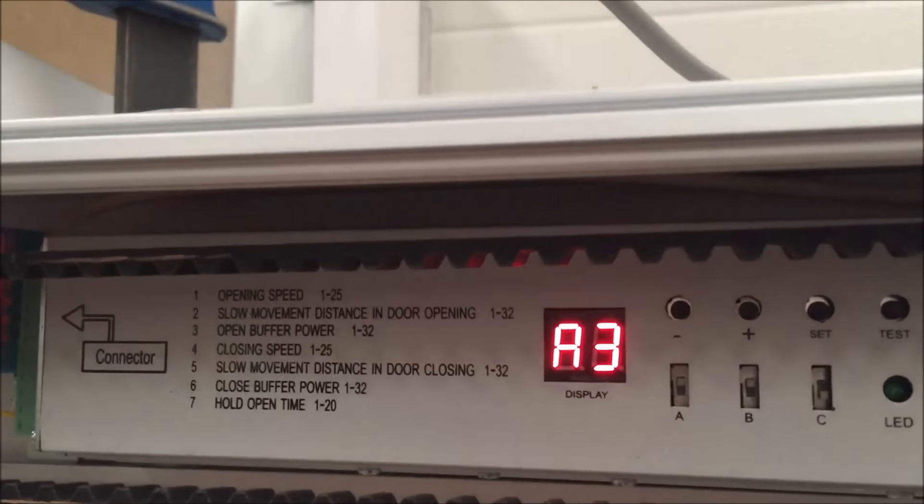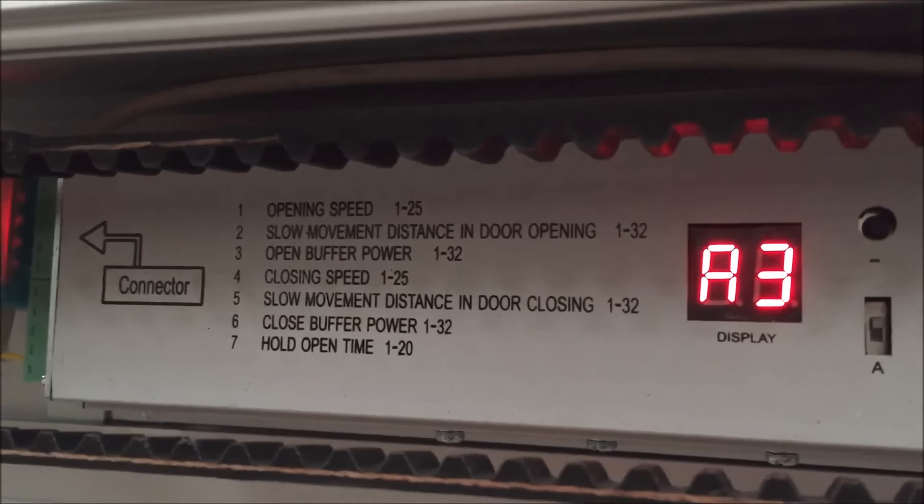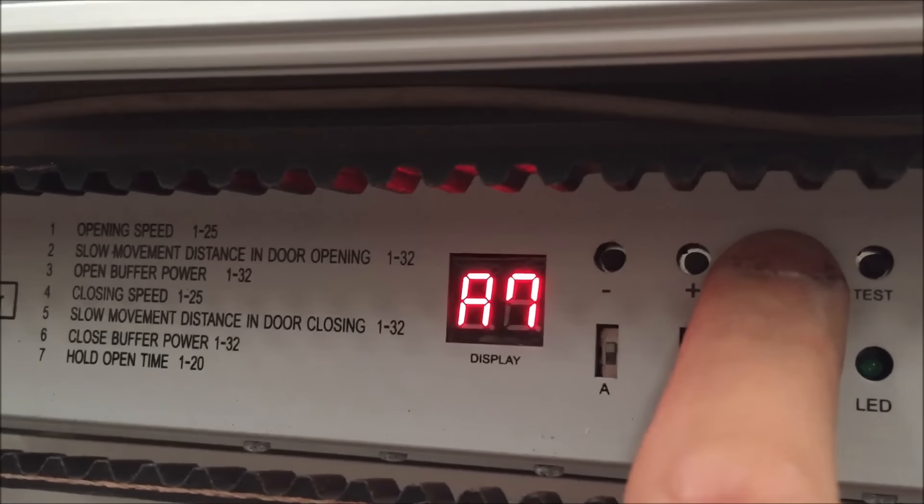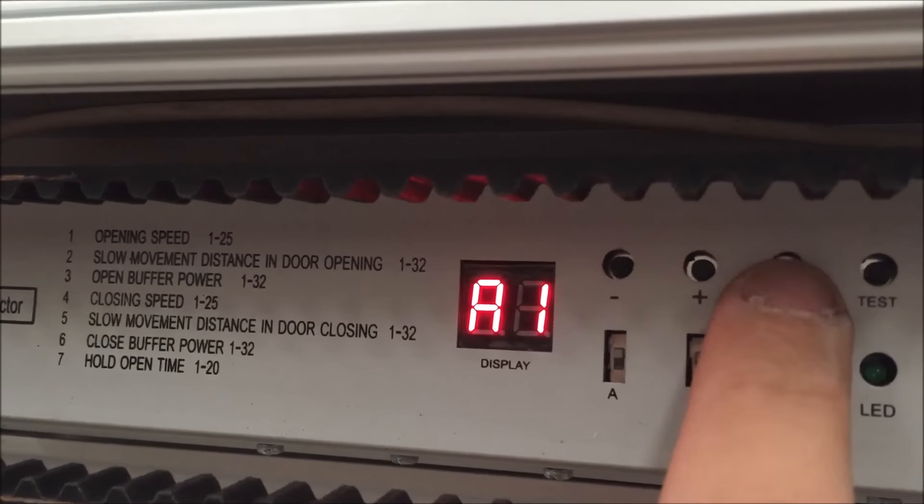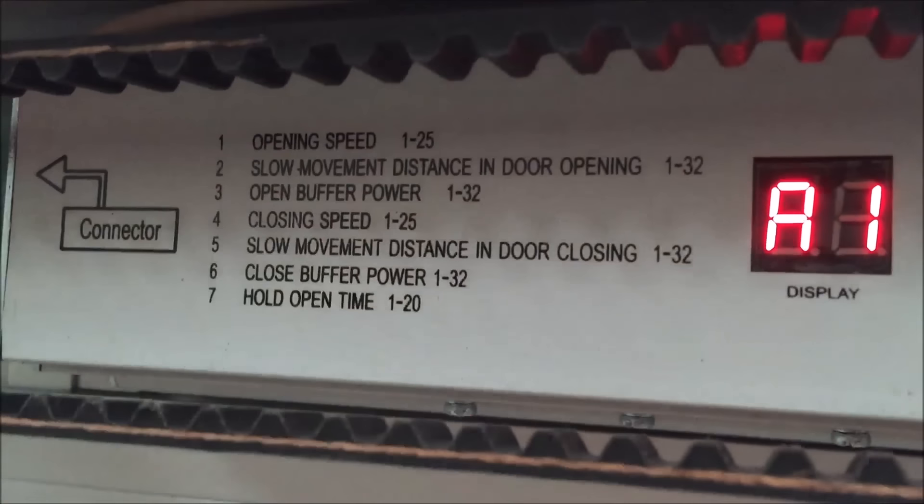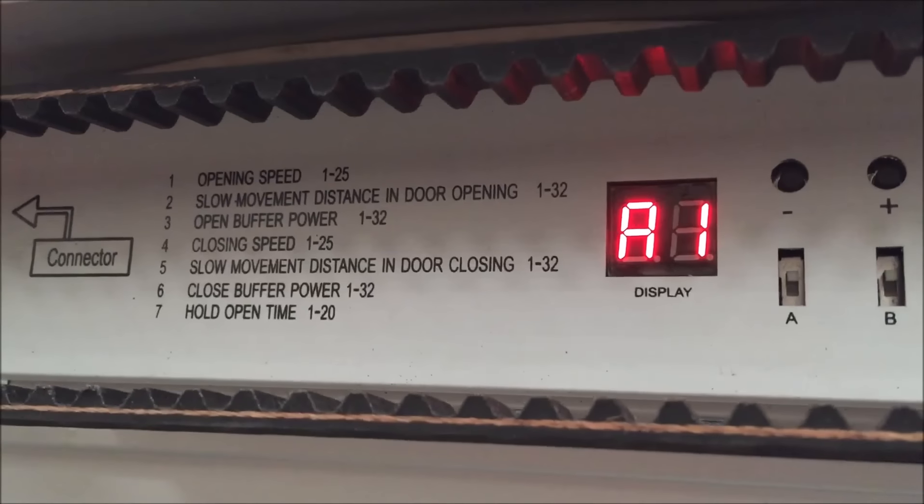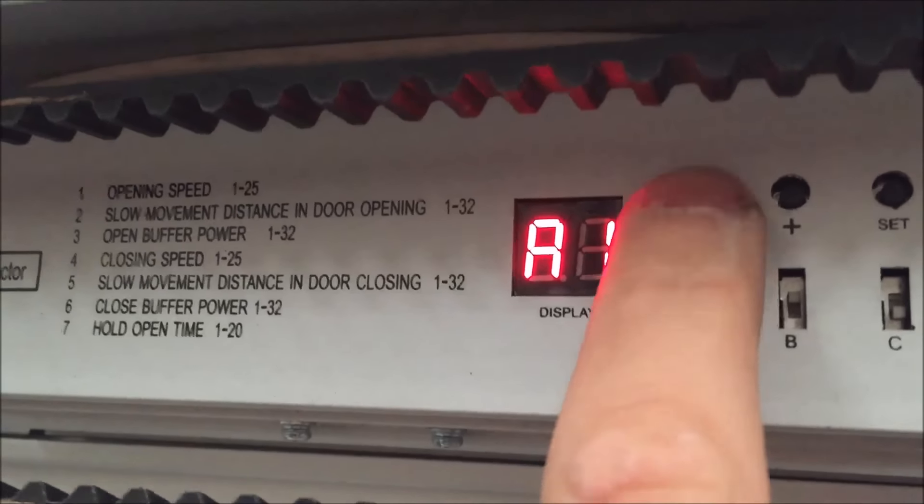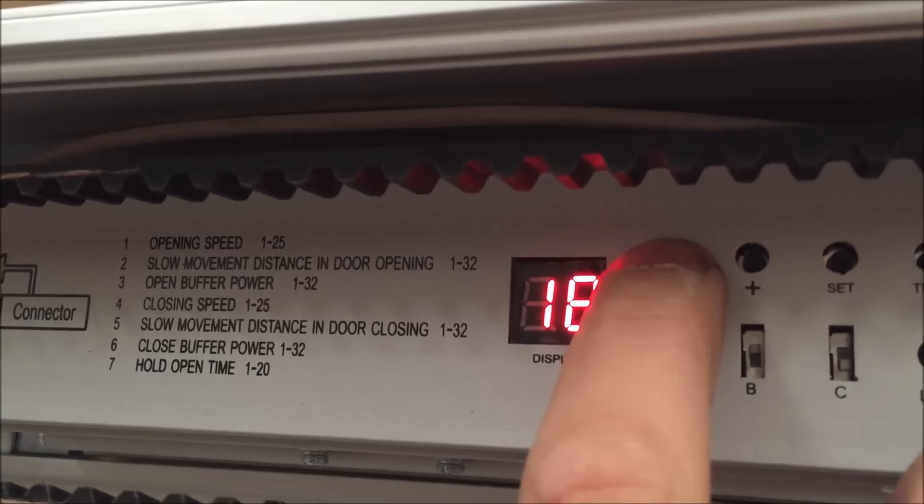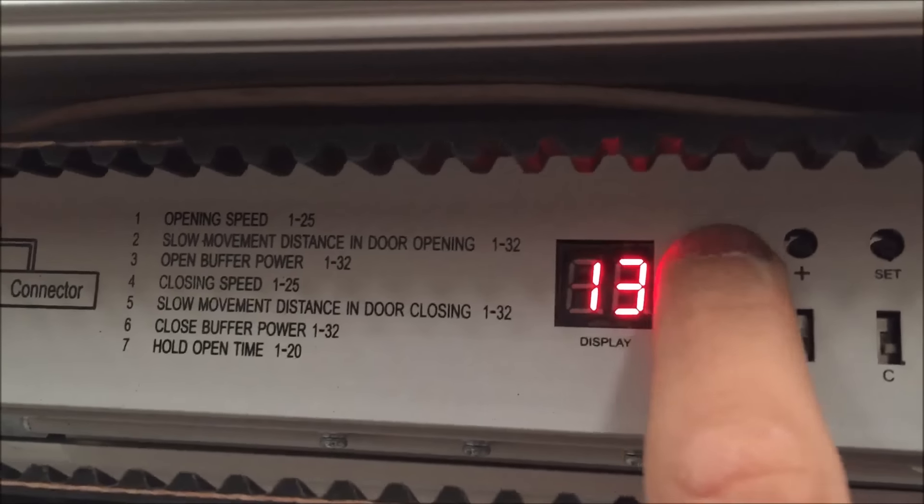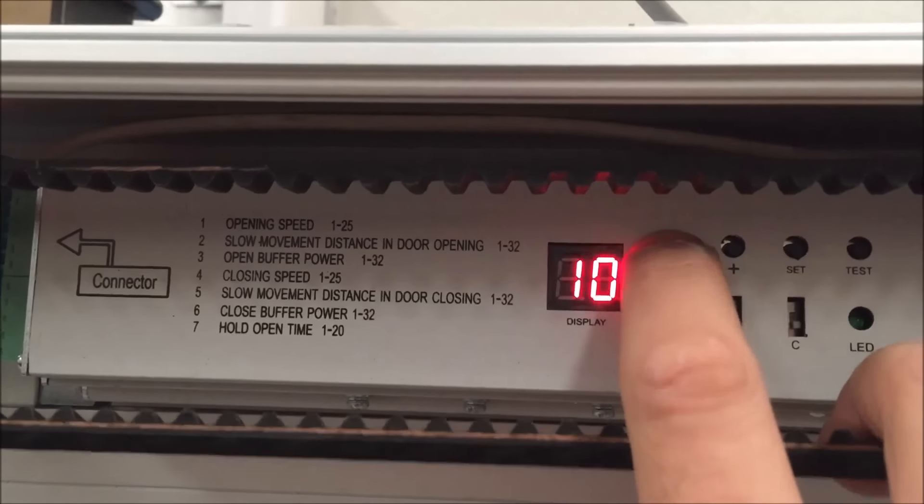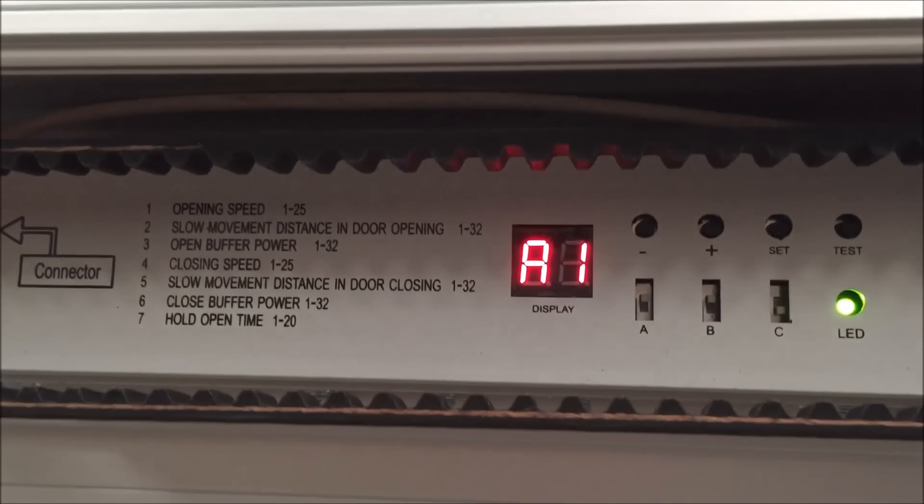Para acceder por ejemplo a la velocidad de apertura que es el menú 1 vamos con la tecla set hasta el A1 y modificamos los valores dentro del rango de 1 a 25 donde el 1 es la velocidad más lenta con la tecla más o la tecla menos. En este caso vemos que está en el 19 y lo vamos a bajar hasta el 10 por ejemplo. Y lo dejamos un poquito y se confirma.